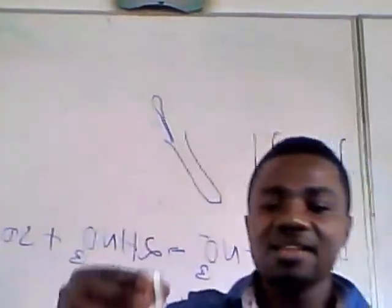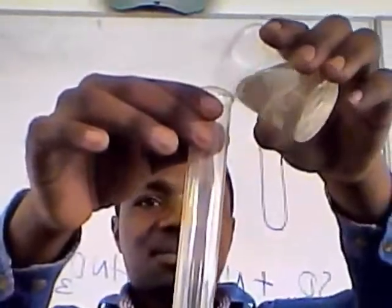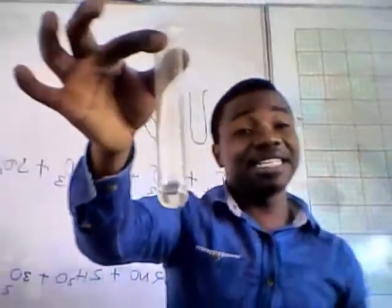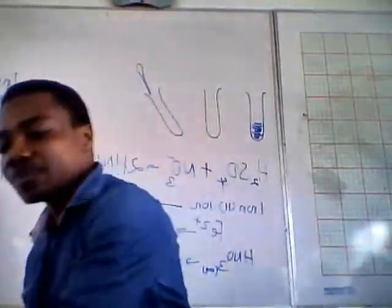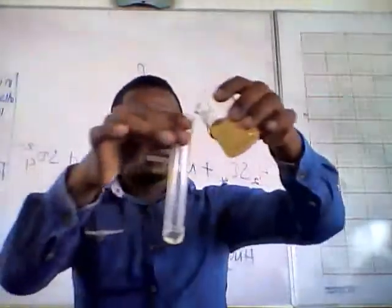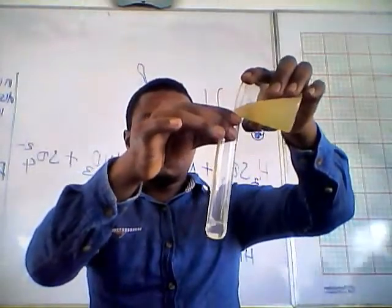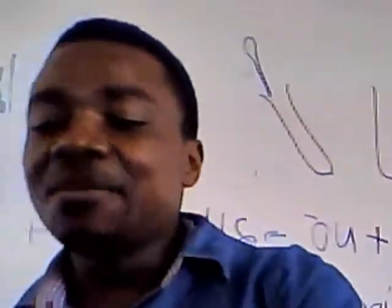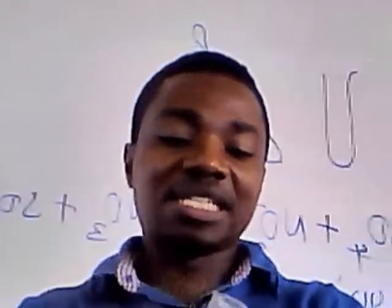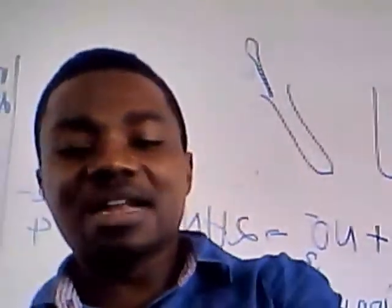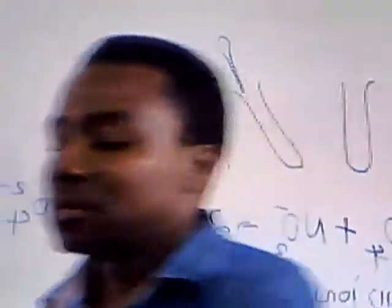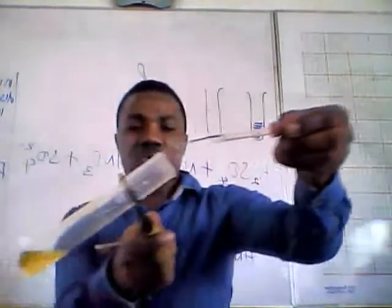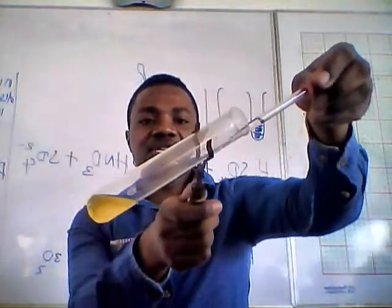Let me repeat. You add the suspected nitrate, then you add freshly prepared iron(II) sulfate. Then, in a slanting position, you add concentrated sulfuric acid carefully through the side.